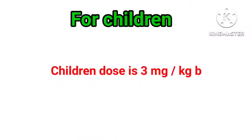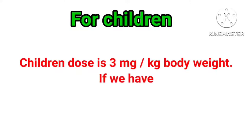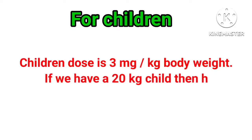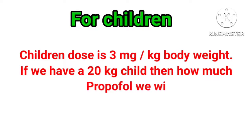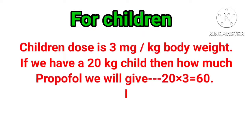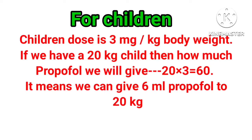Dose calculations for children: the dose is 3 mg per kg body weight. If we have a 20 kg child, then 20 multiplied by 3 equals 60 mg, which means we can give 6 ml of Propofol to a 20 kg child.